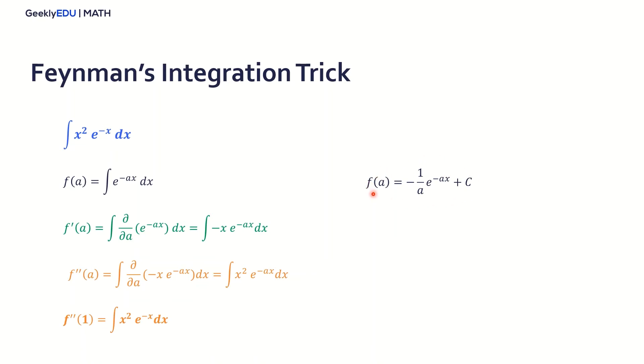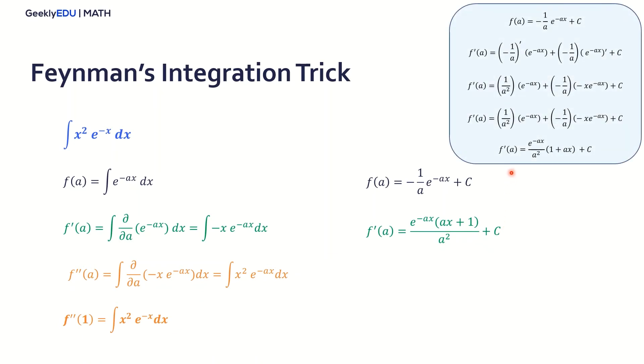We know that our first derivative of this function over here will be e to the negative ax times ax plus 1 over a squared. I'm not going through this derivation. I'm going to leave it over here. You can pause the video if you want to take a look at it. But it's quite simple. I'm just doing the product rule here.